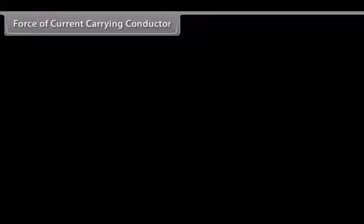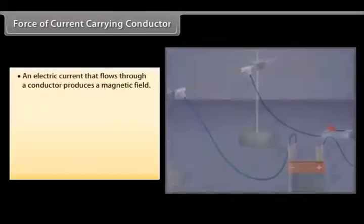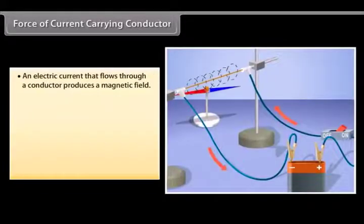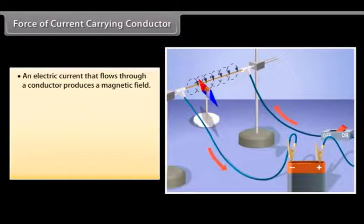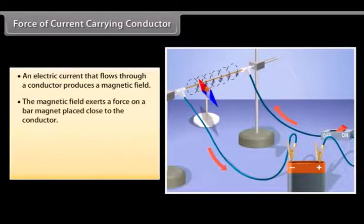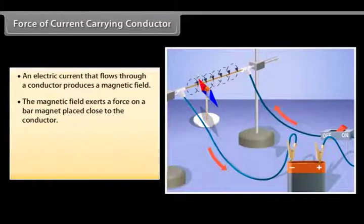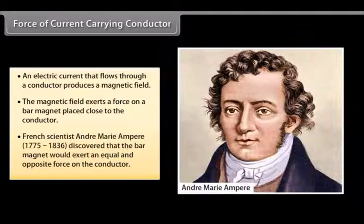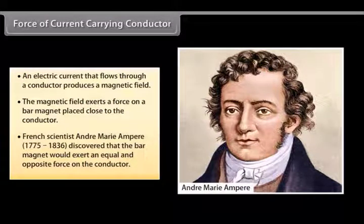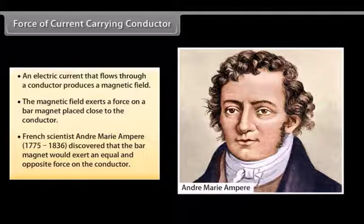Force of current carrying conductor. We have seen that an electric current that flows through a conductor produces a magnetic field. The magnetic field so produced exerts a force on a bar magnet placed close to the conductor. French scientist André-Marie Ampere (1775-1836) discovered that the bar magnet would also exert an equal and opposite force on the conductor.